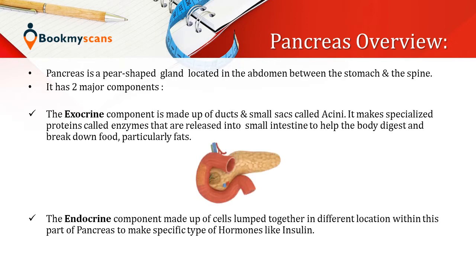Before proceeding further, let's have an overview of the pancreas. The pancreas is a pear-shaped gland located in the abdomen between the stomach and the spine. It has two major components: the exocrine and the endocrine. The exocrine component is made up of ducts and small sacs called acini, and it makes specialized proteins called enzymes that are released into the small intestine to help the body digest and break down food, particularly fats. The endocrine component is made up of cells that produce specific hormones like insulin.